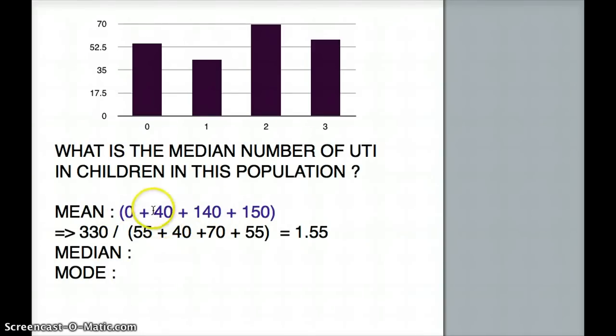So for an even number like this, we take the middle two values. In this case it's 40 and 140 divided by 2. So this is going to be 40 plus 140 divided by 2, and the answer is going to be 180 divided by 2 is 90. So that is going to be our median.